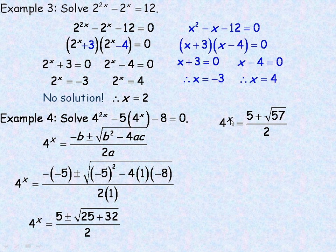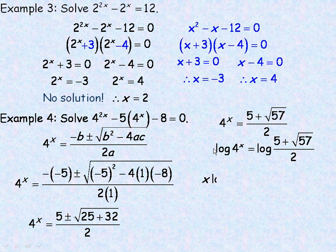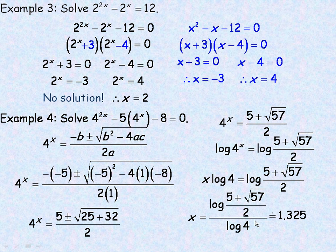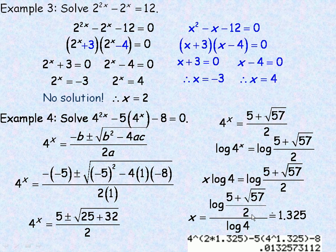To solve for x, since x is in the exponent, we use a logarithm. Taking the log of both sides and applying the power law brings x down: x times log 4 equals log of (5 plus root 57) over 2. Dividing both sides by log 4 gives x approximately 1.325. To check, plugging 1.325 in for x: 4 to the 2 times 1.325 minus 5 times 4 to the 1.325 minus 8 should equal 0. It comes out to about 0.013 — very close to zero, just due to rounding to three decimal places.